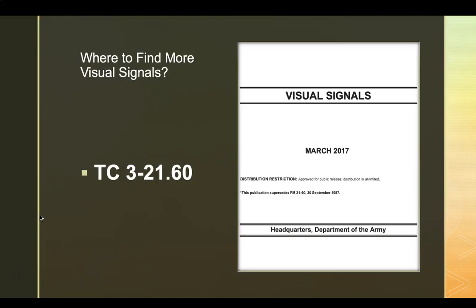After going through all these visual signals, you may be wondering, where did I find these? All of the Army has all of its documents online and you can find these. This is the Army document which I got my information. It's TC 3-21.60. You can look this up online and find the updated one, and you can go through it and learn as many visual signals as you would like or reference the one I showed you for more information.